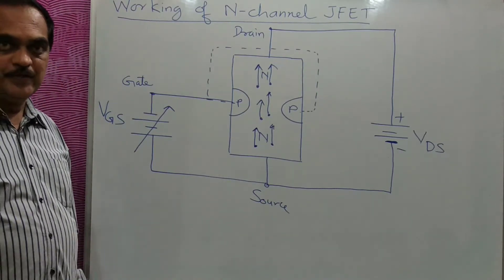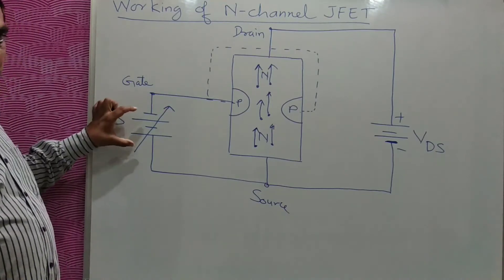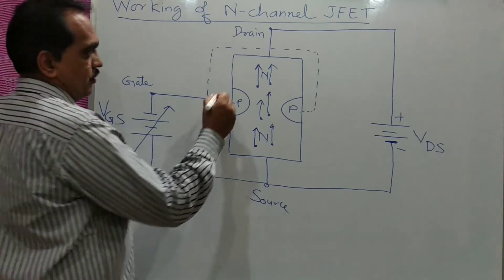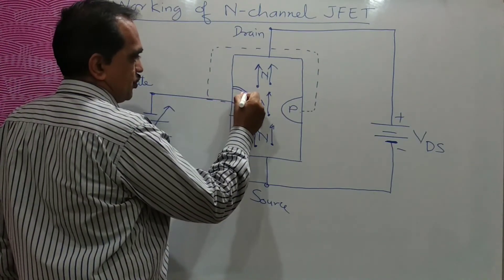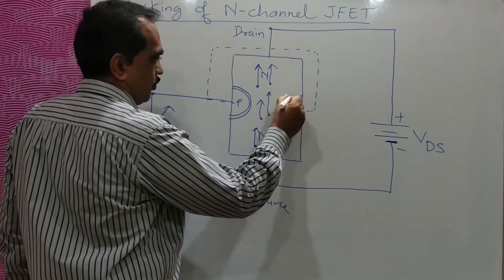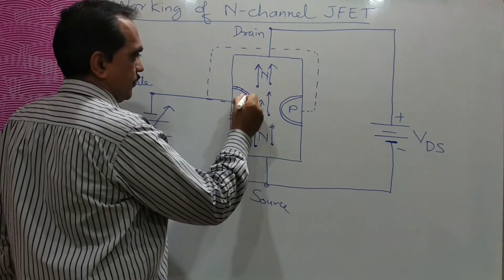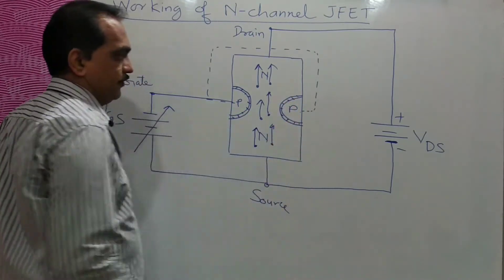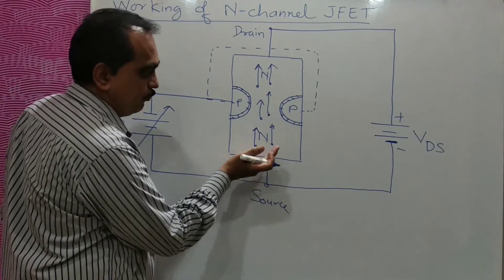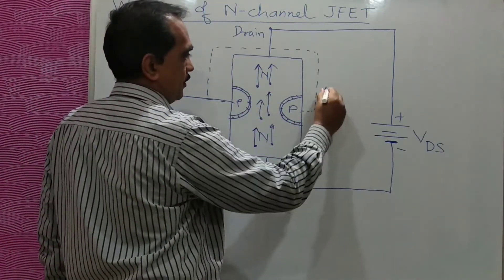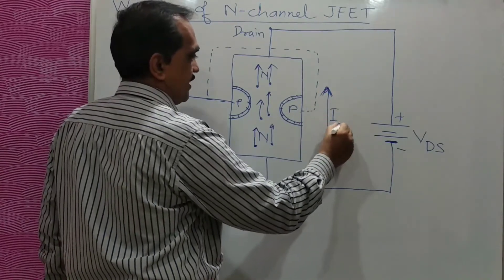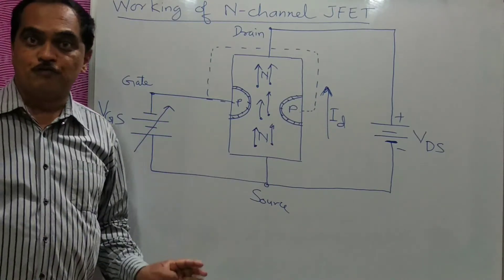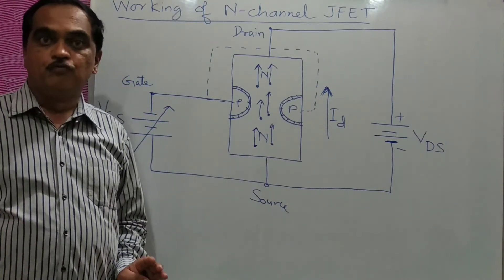Initially, VGS will be zero and VDS will be zero. When both are zero, a small P-N junction will be formed, and there will be no flow of current. The electrons will not flow from source to drain, so there is no drain current initially.